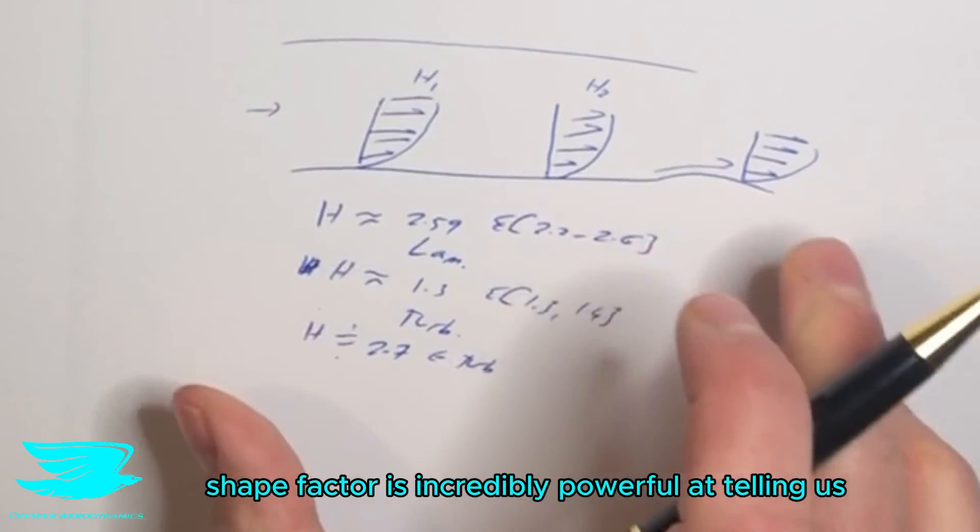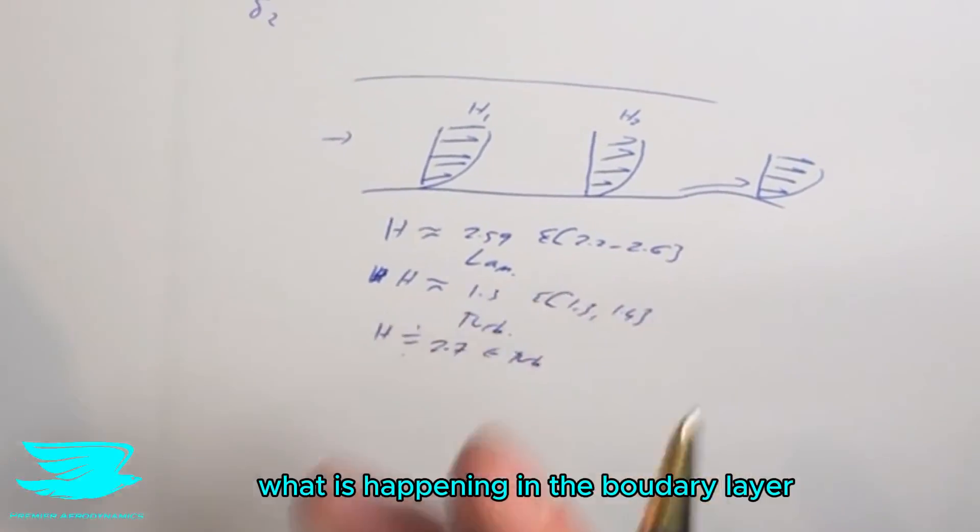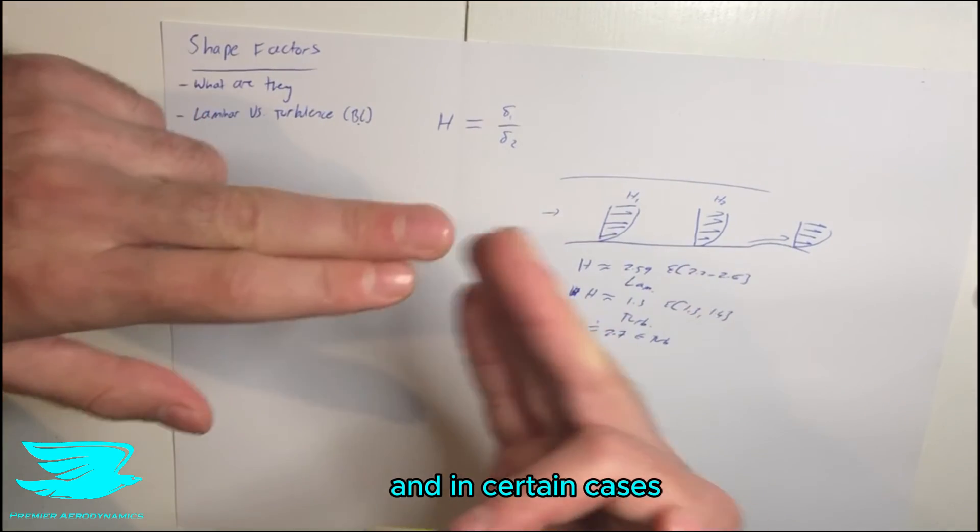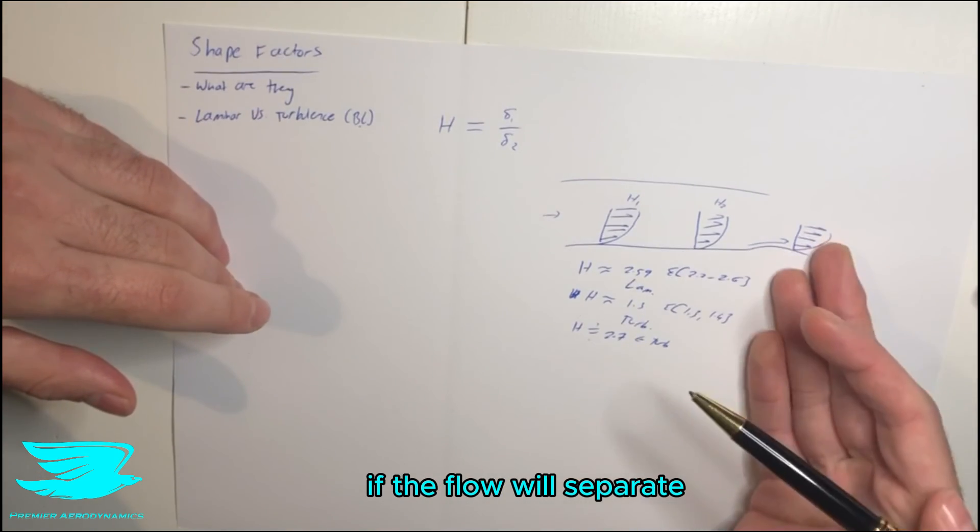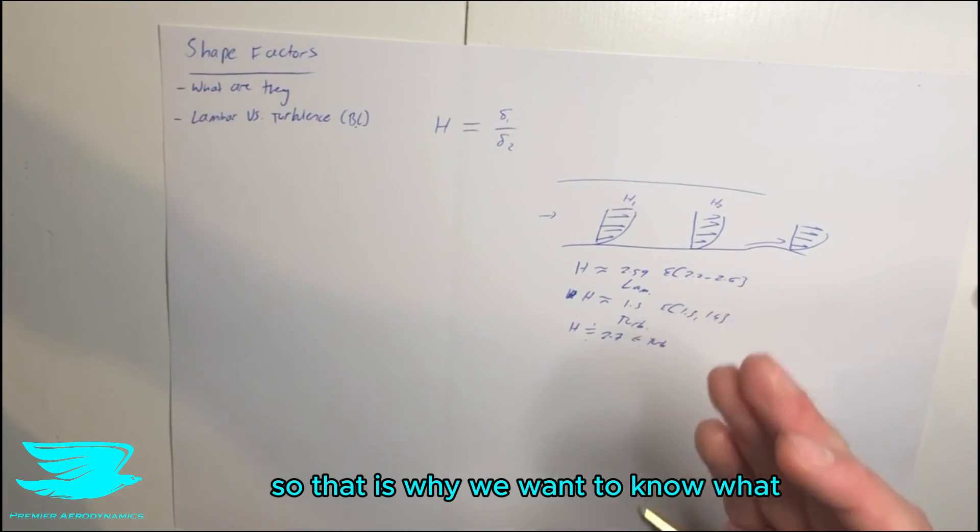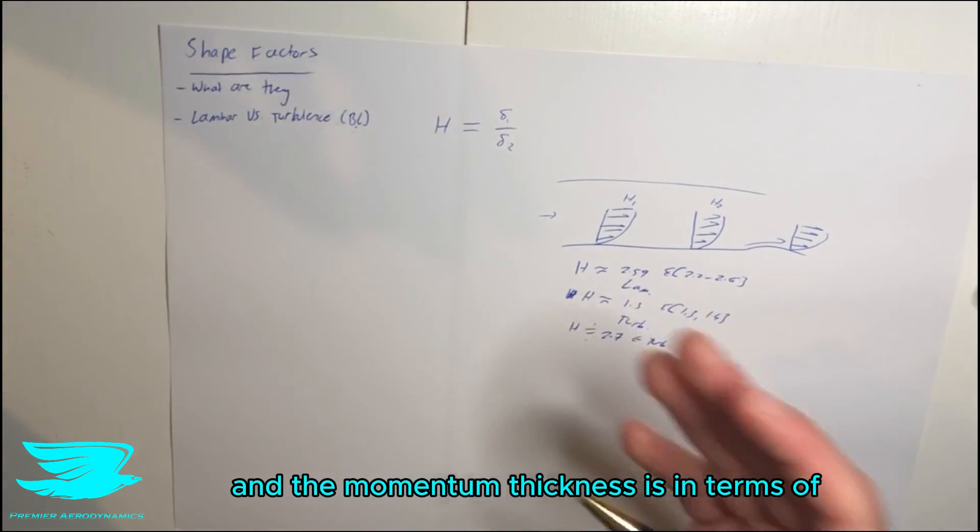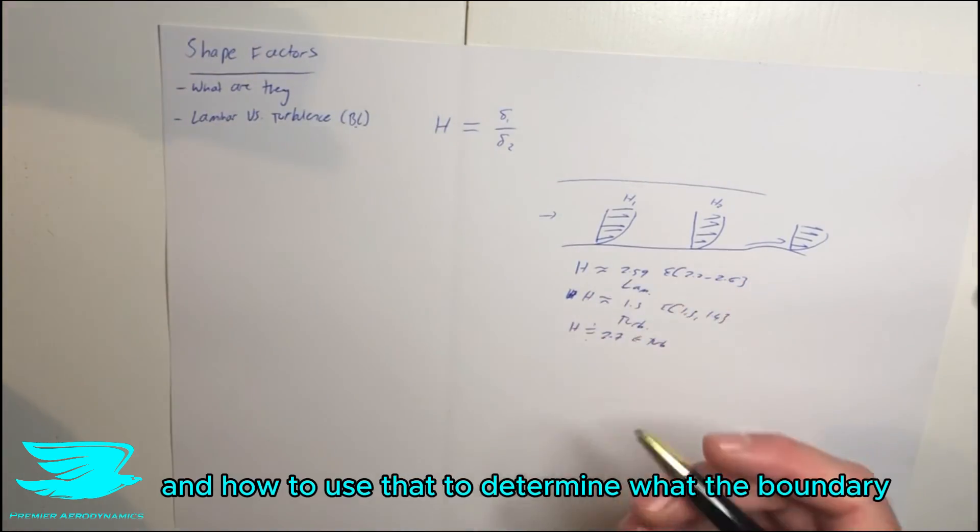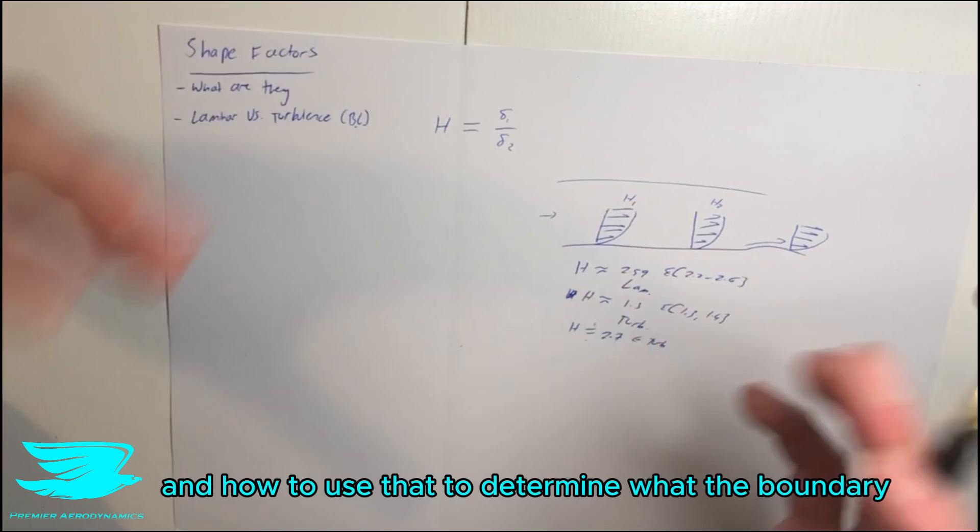So, the shape factor is incredibly powerful at telling us what is happening in the boundary layer, whether it's laminar or turbulent, and in certain cases, if the flow will separate. So, that is why we want to know what the displacement thickness is and the momentum thickness is in terms of practical point of view, and how to use that to determine what the boundary layer is doing.